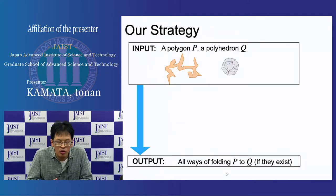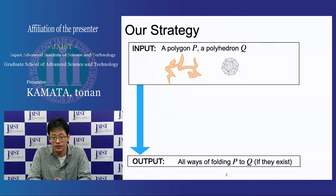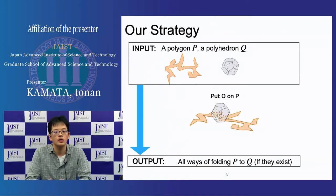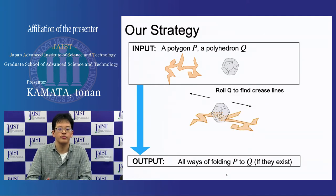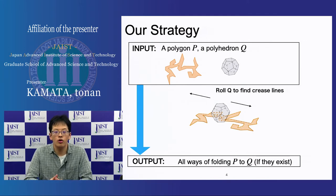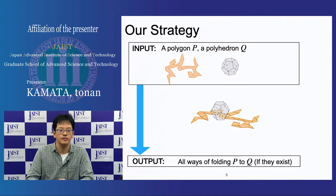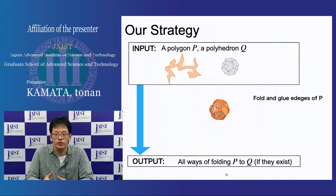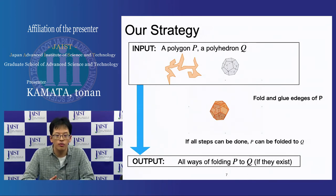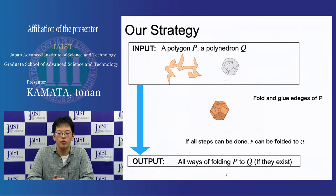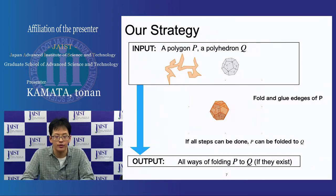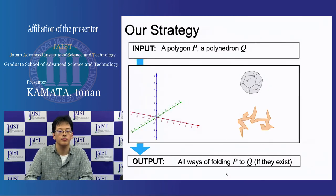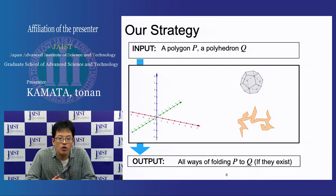First, I give our strategy intuitively. Put the polyhedron on the polygon and roll the polyhedron to find crease lines. Then fold the polygon and glue edges of the polygon. If all steps can be done, the polygon can be folded to the polyhedron.